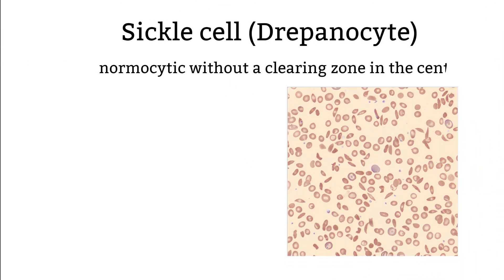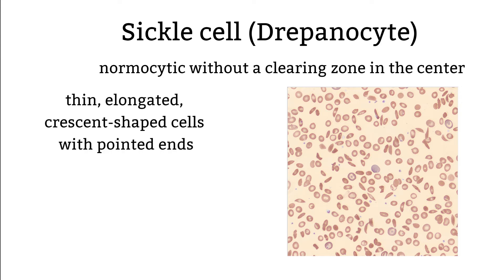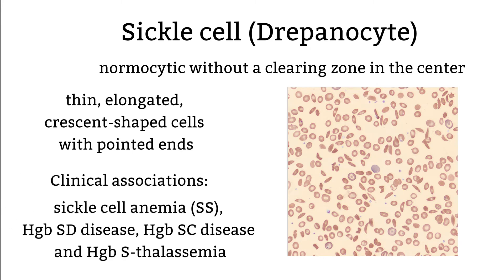Sickle cell. It's usually normocytic with no pallor zone in the center. The shape is thin, elongated, croissant-shaped with pointy ends. This type of cell is present in abnormal hemoglobin S. The cell becomes inflexible and deforms as it passes through the microcirculations of the spleen. Many sickle cells can reverse back to normal shape — the reversible cell shape is thicker and rounder with no pointed ends. Here are some diseases associated with this type of morphology.